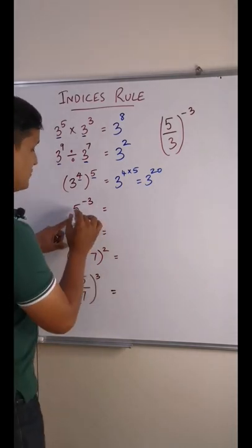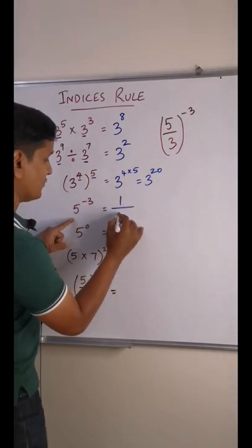If there is a negative power, you have to convert it into the positive power. Write 1 over 5 raised to 3.